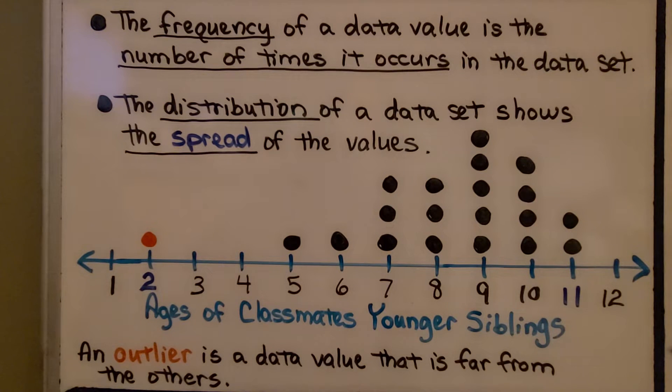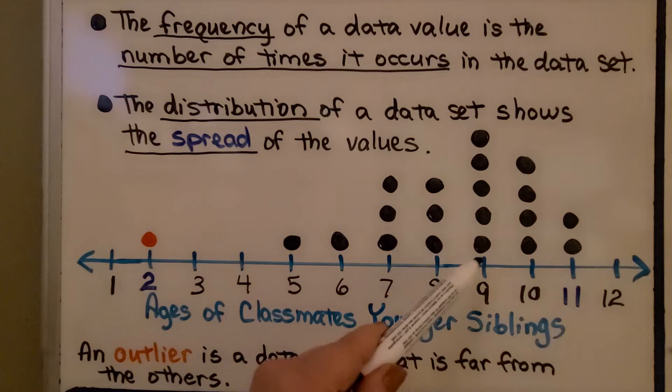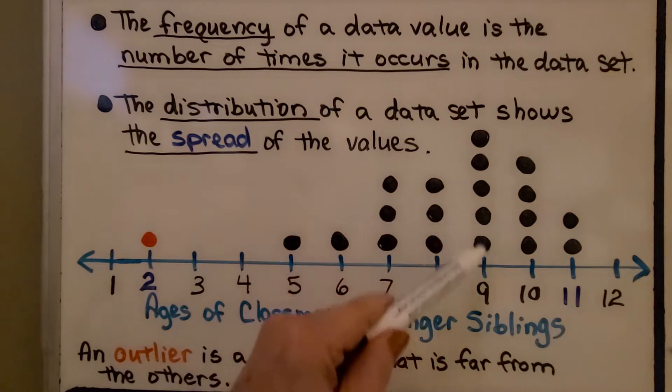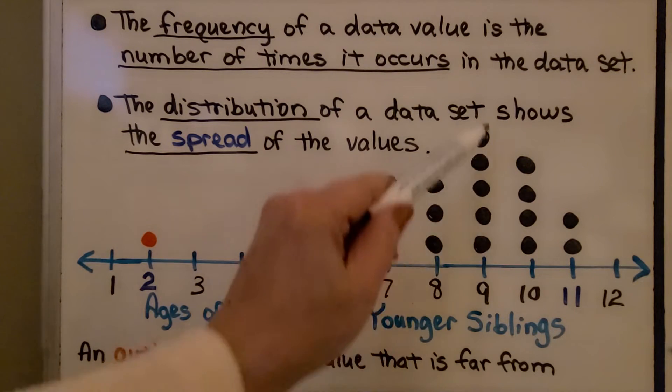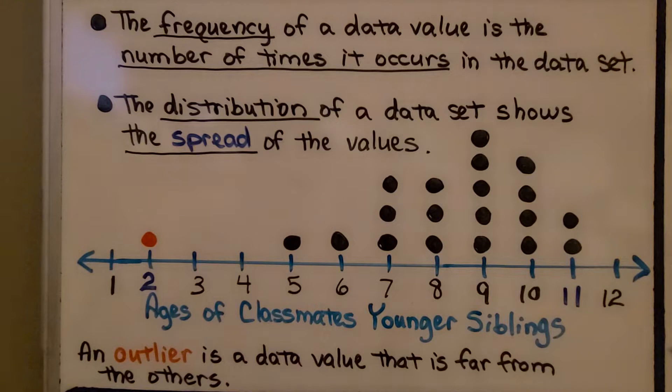The frequency of a data value is the number of times it occurs in the data set. The distribution of a data set shows the spread of the values. So we can see the frequency of 9 occurs 5 times. The distribution is the spread.